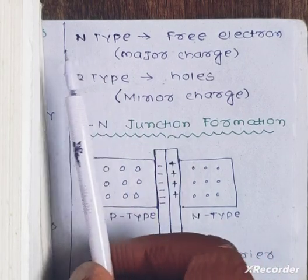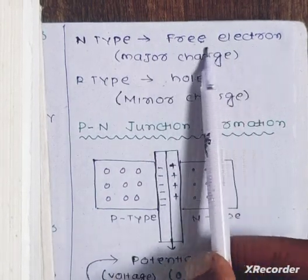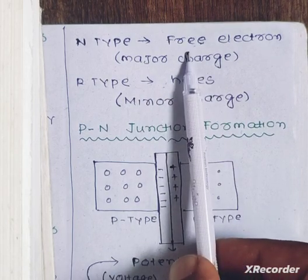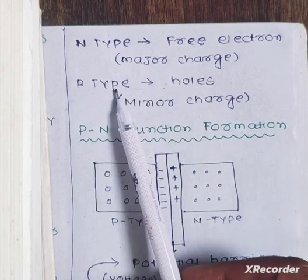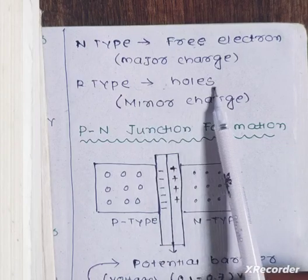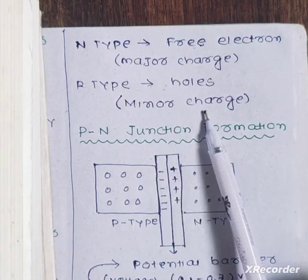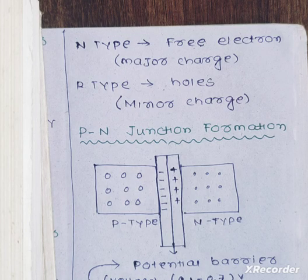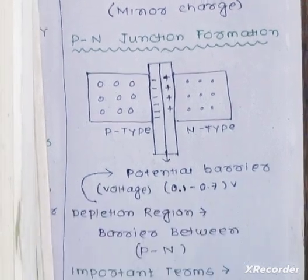In an N-type semiconductor, the free electrons are the major charge carriers and holes are the minor charge carriers. In a P-type semiconductor, holes are the major charge carriers and electrons are the minor charge carriers.